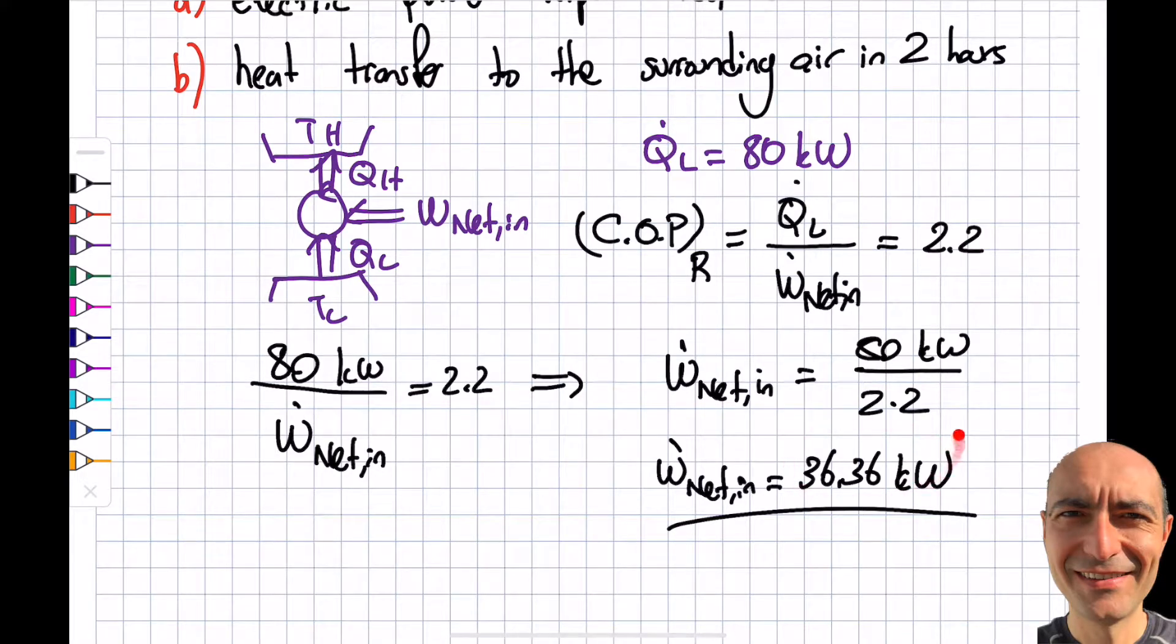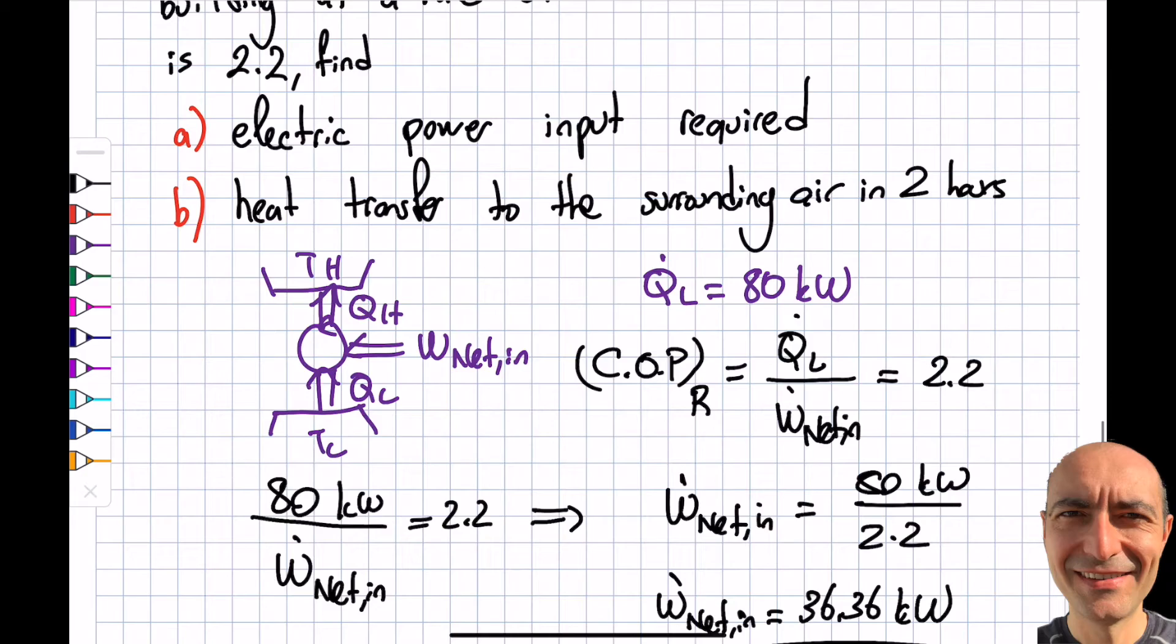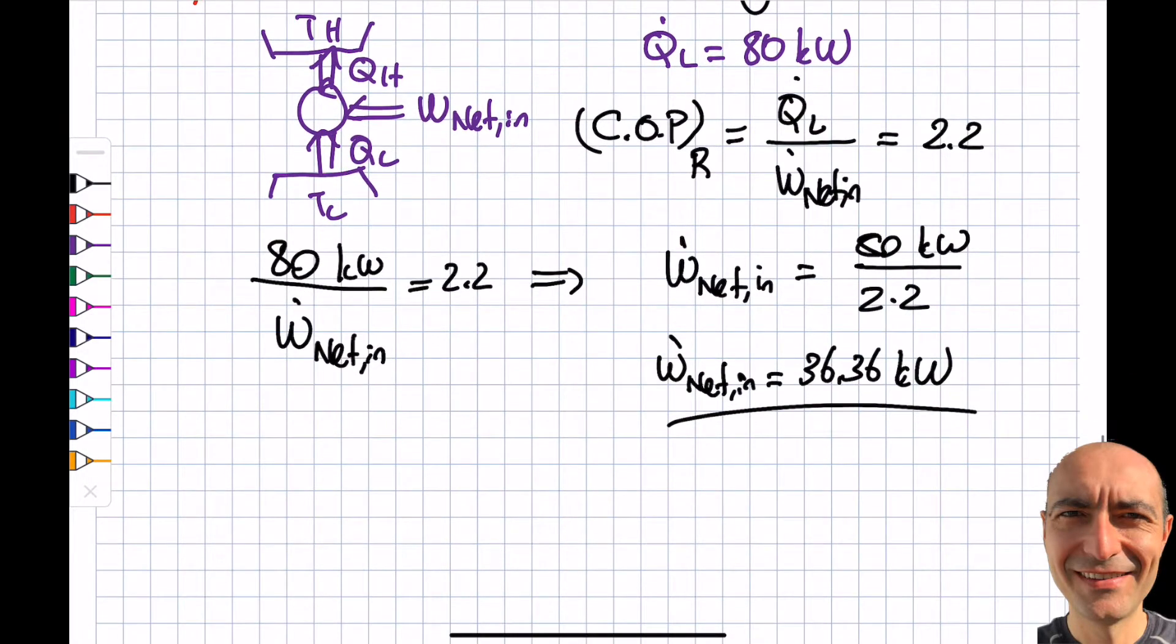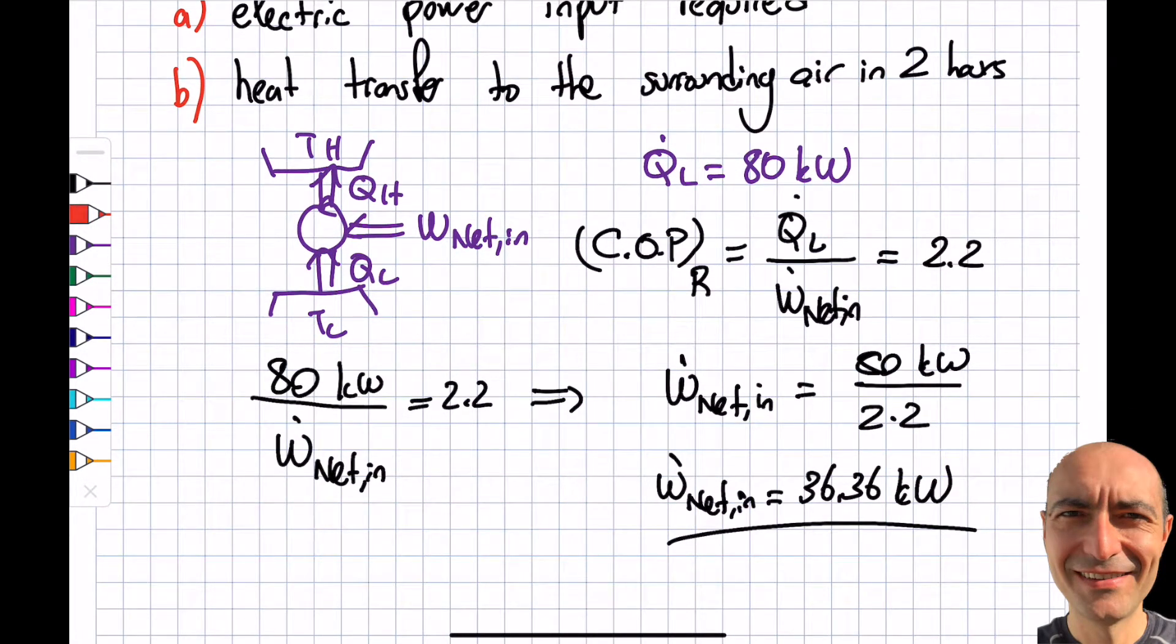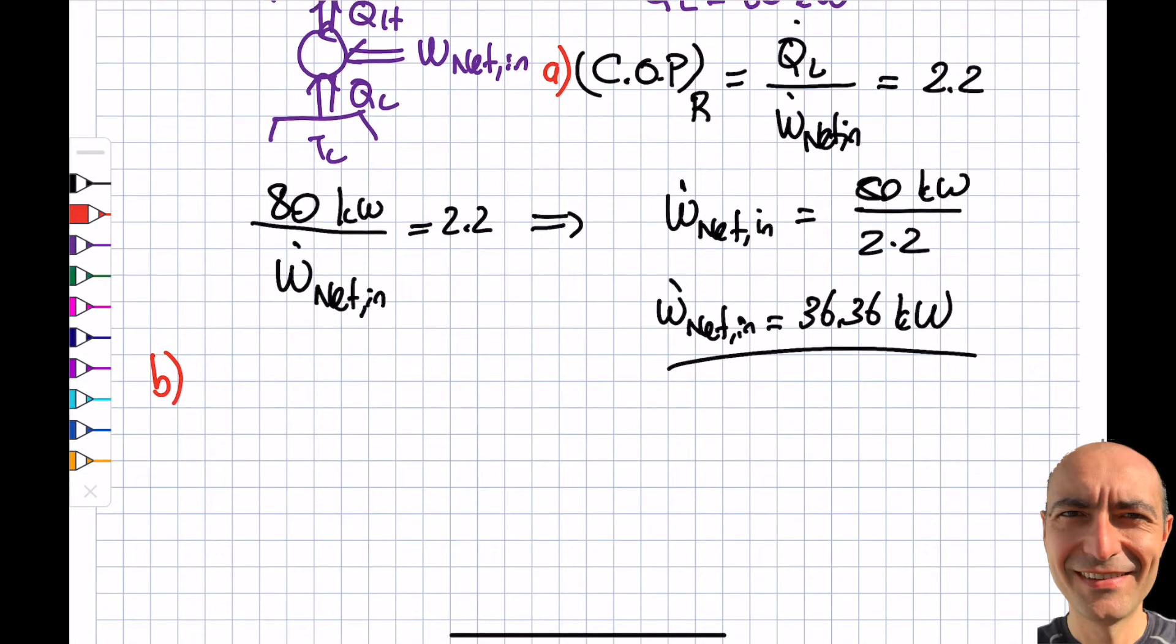Part (b) is asking for heat transfer to the surrounding air, which is the ambient air warmer than my room. It's asking about Q_H, but over two hours, so in terms of joules. Please read your question carefully to understand what it's asking. Let's start by finding Q_H.